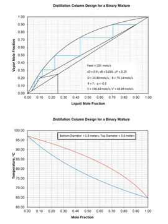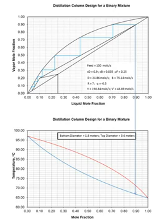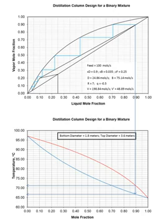Now we do an energy balance around the condenser. Vapor enters the condenser and is transformed into liquid at that pressure. We determine the temperatures of both streams from the vapor-liquid equilibrium curve and the temperature mole fraction curve. Knowing the distillate mole fraction is 0.9 and projecting down to the temperature curve, the vapor at the top of the column is approximately 71.5 degrees Celsius, and the liquid leaving the condenser is approximately 67 degrees C.